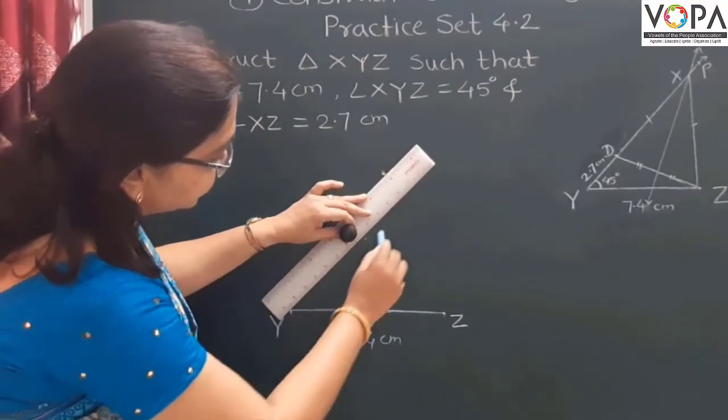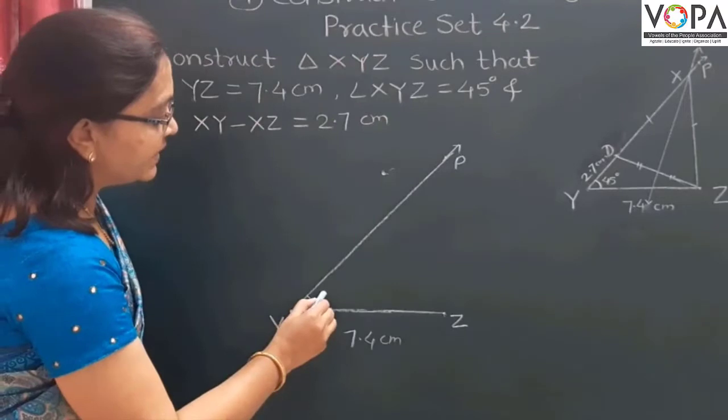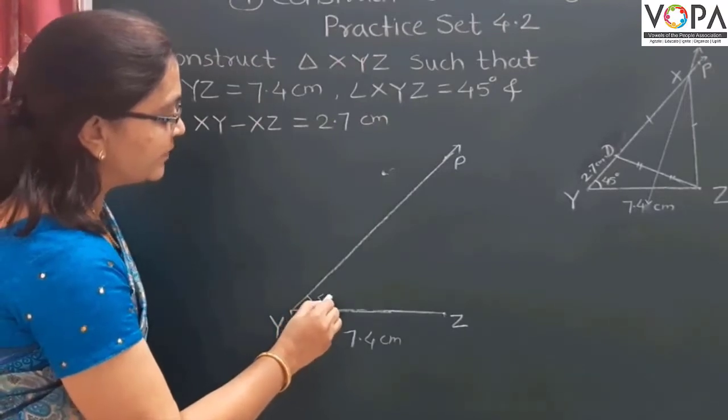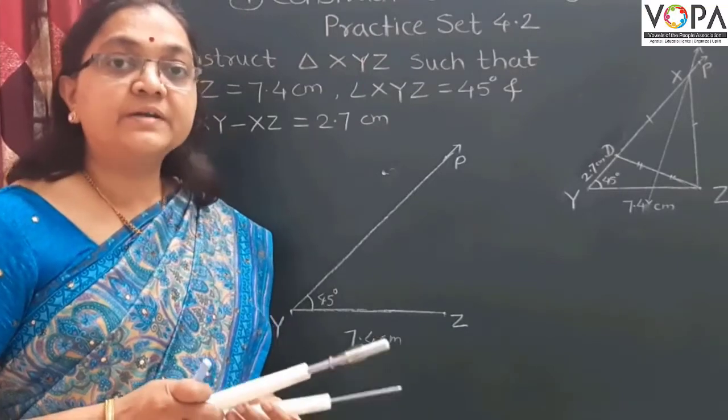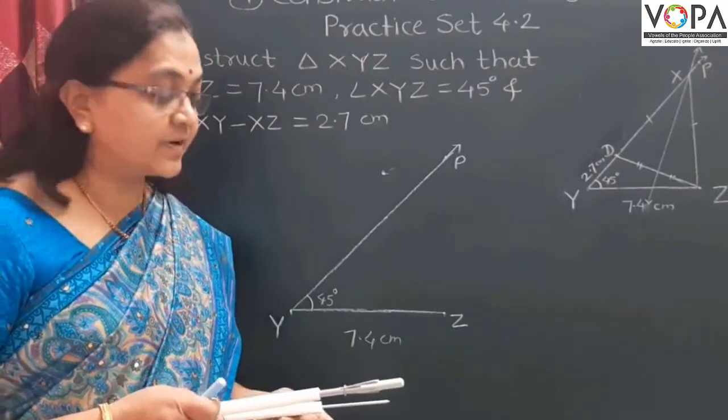Then draw the ray YP making an angle of 45 degrees. Take 2.7 cm distance in your compass.